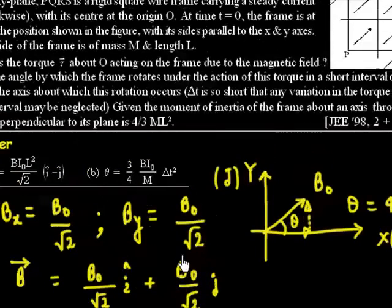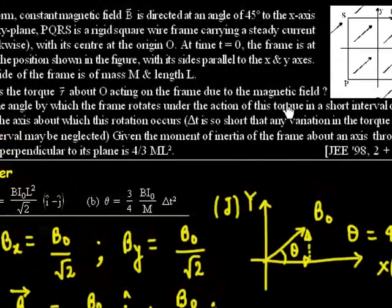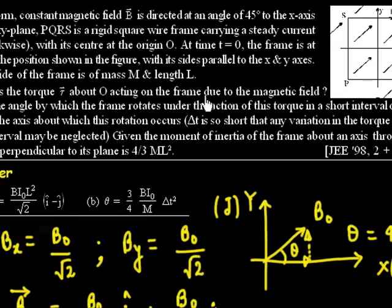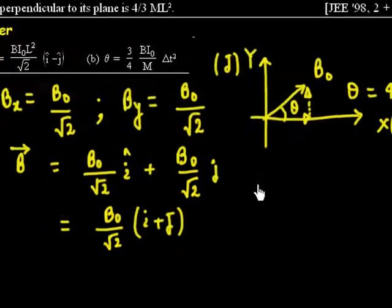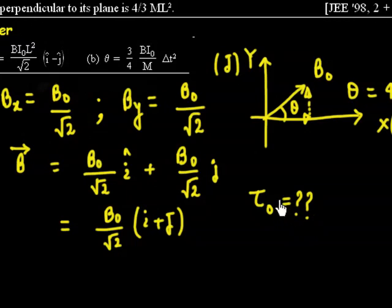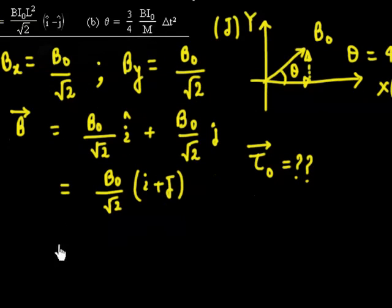At t = 0, the frame is positioned as shown. The mass of the frame is m and each side has length l, so this is a square loop of side l. We need to find the torque about O acting on the frame due to the magnetic field. The torque is given by τ = μ × B.